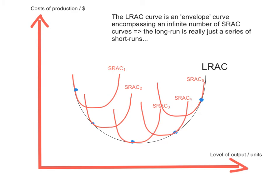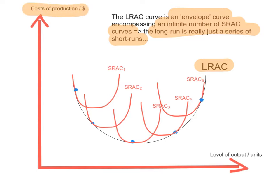In the previous video in this series we looked at the long run average cost curve. The long run average cost curve is an envelope curve encompassing an infinite number of short run curves, because the long run is really just a series of short runs. Firms are never really in the long run for a long period of time — they basically move from one short run to the other. On the y-axis we have the costs of production in dollars, and on the x-axis we have the level of output.